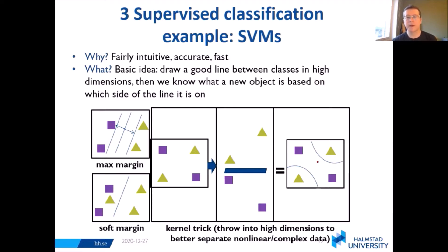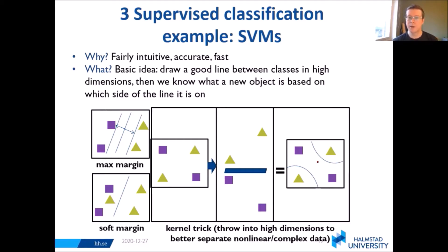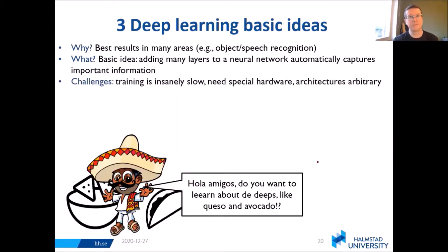Finally, the kernel trick. If we're looking at the XOR function again, we can't draw a line between these in two dimensions. But we can easily imagine projecting these so that the triangles go up a little bit higher and the squares fall a bit lower, and we can put a hyperplane between them. In two dimensions it looks like a curve, but in higher dimensions, it is a hyperplane.